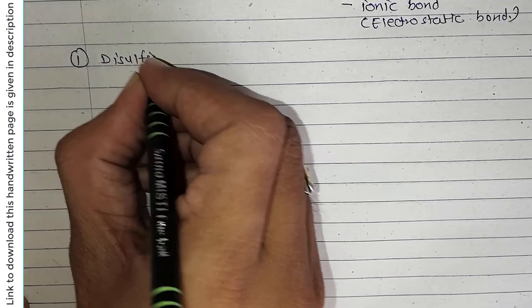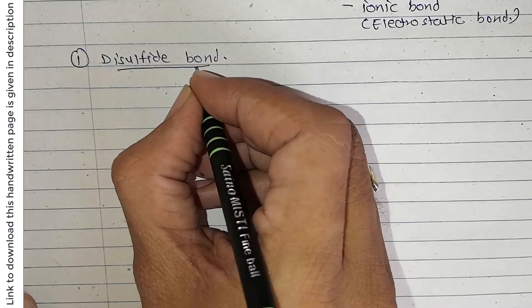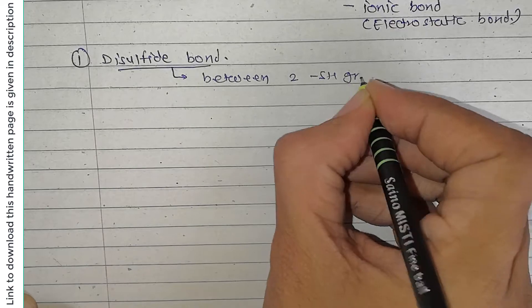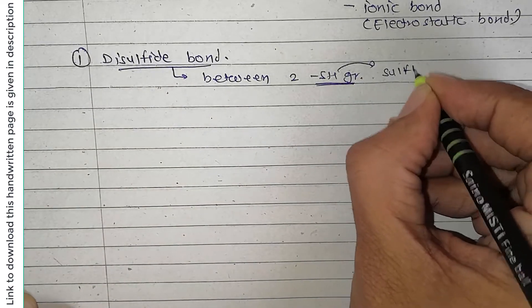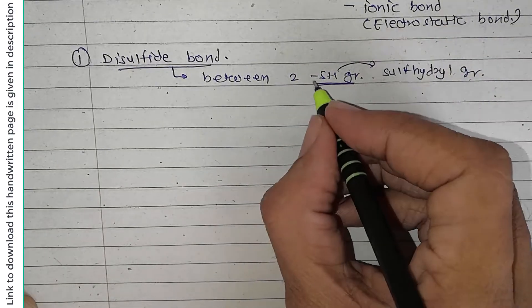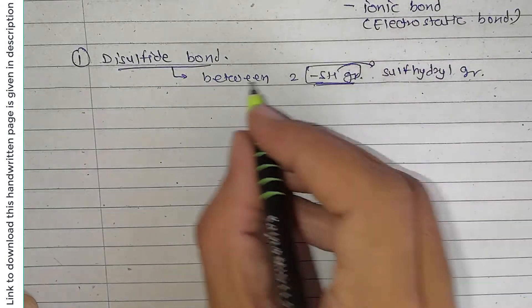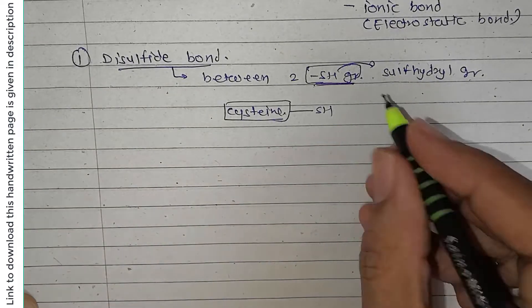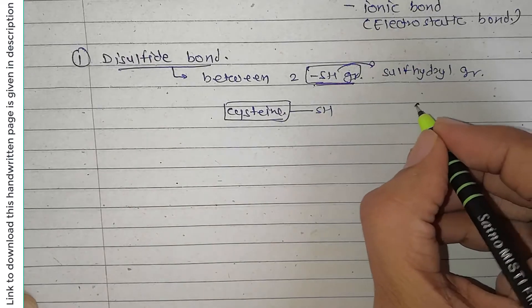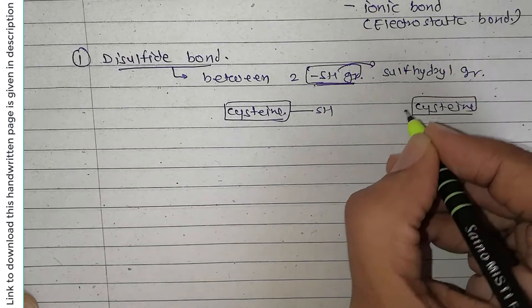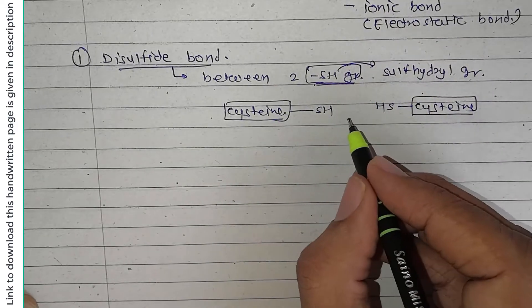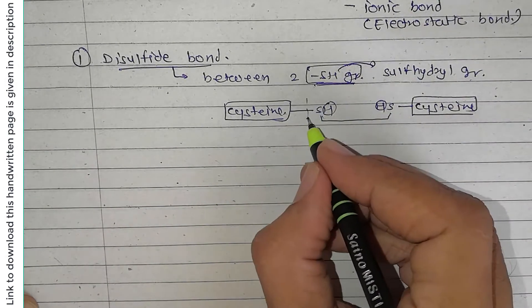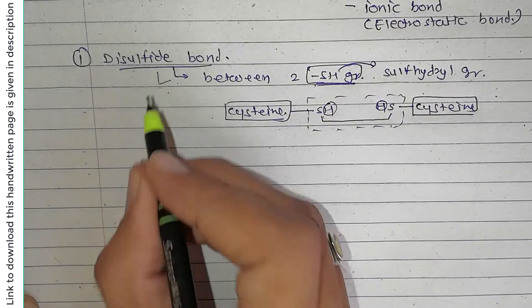Disulfide bonds occur between two SH groups, known as sulfhydryl groups. The SH group occurs in the cysteine amino acid, whose side chain contains this sulfhydryl group. When one cysteine residue comes near another cysteine residue, hydrogen is removed and the sulfur atoms bind directly — forming the disulfide bond.